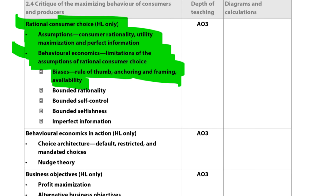Framing is about how a choice is presented. Advertising is important because the way a product is framed changes how consumers perceive it. If something is advertised positively, you're more likely to buy it. For example, Nike Air Jordans framed as an investment — 'they'll be worth $5,000 in the future' — might lead you to make an impulse purchase of $500 shoes even if it doesn't actually maximize your utility.